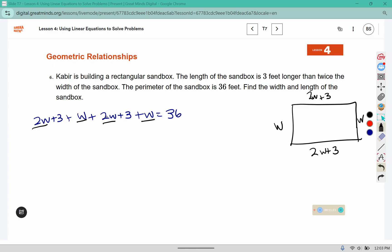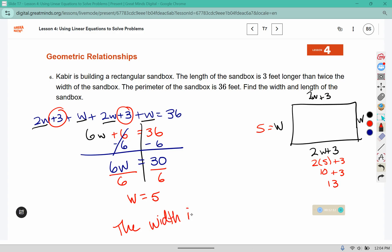Now we'll combine our like terms, 2W, 3W, 4, 5, 6W, and our number pieces. So we're moving the numbers together, 36 minus 6 is 30. Divide both sides by 6 and that gives us W equals 5. It says find the width and the length. Well the width is 5, the length is 2 times 5 which would be 10 plus 3 which is 13. This did give us units, so we should include those 5 feet and 13 feet.